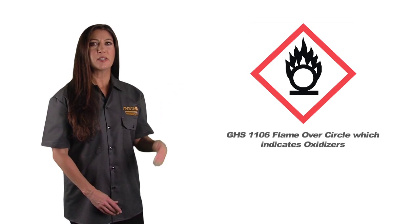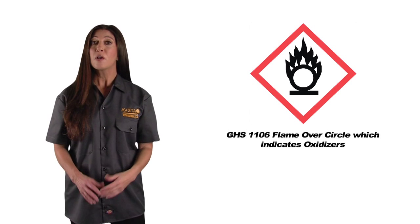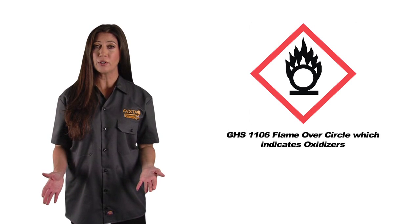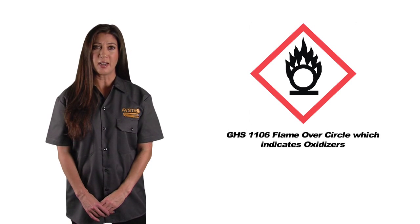Our seventh symbol is GHS 1106, flame over circle, which indicates oxidizers.